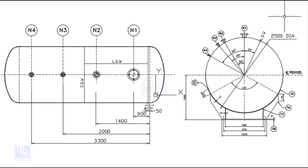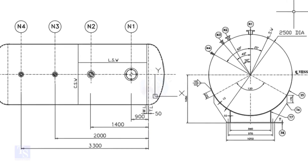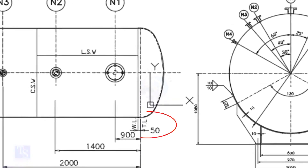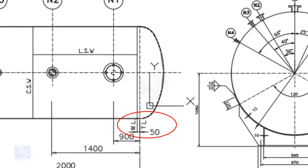Let us have a look at the drawing. Please note that I drew this drawing for teaching purposes only. What is TL and WL? TL stands for Tan Line and WL stands for Weld Line. The surface between the TL and the WL is called SF, or Straight Face. Here, the straight face is 50mm.